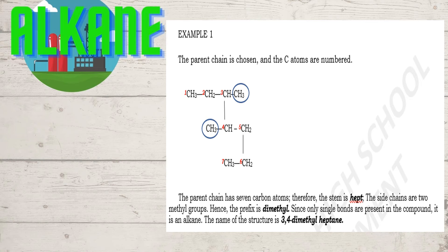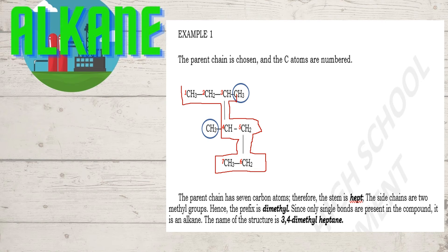Here is example number one. The parent chain is chosen and the carbon atoms are numbered as you can see in your sample. Let's find the longest continuous chain — that is rule number one. The longest continuous chain has seven carbons, so the parent chain has seven carbon atoms and the stem is hept-, since you have seven carbon atoms.